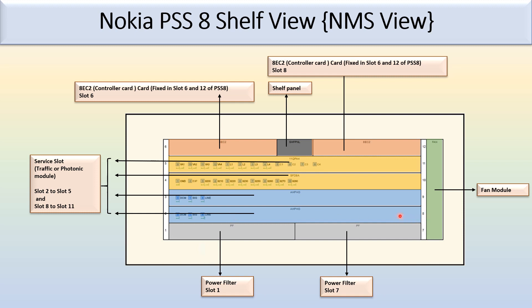If the full slot is used, the slot numbering is from 2, 3, 4, 5. If the half slot is used, the slot numbering is like 2, 3, 4, 5 on one side and 8, 9, 10, 11 on the other. So this is all about the Nokia PSS-8 shelf view. Thank you.